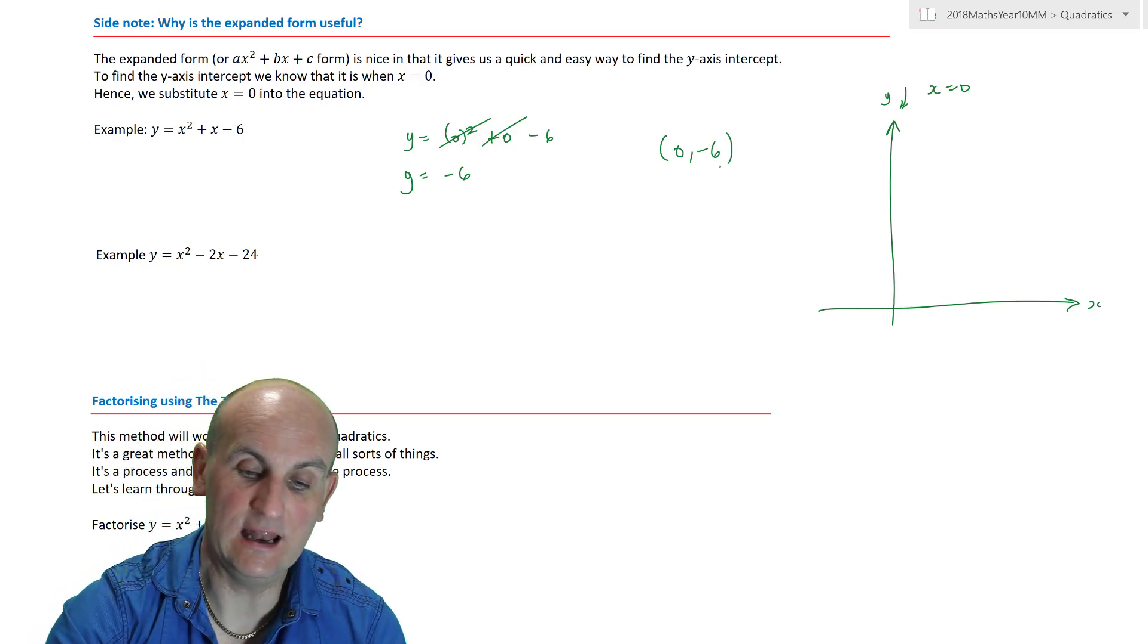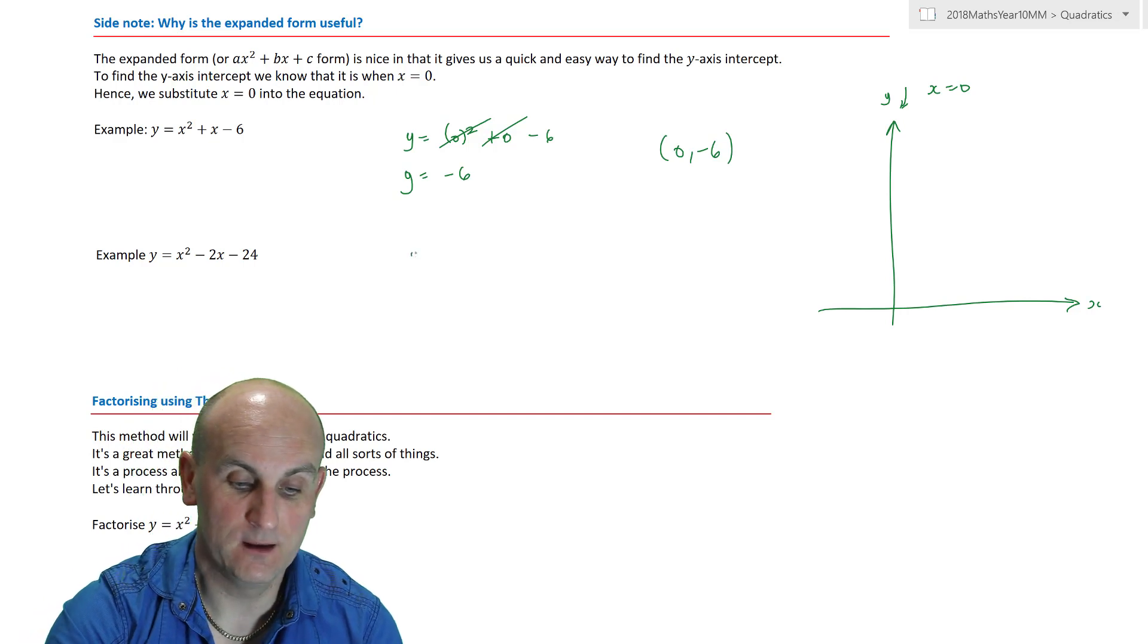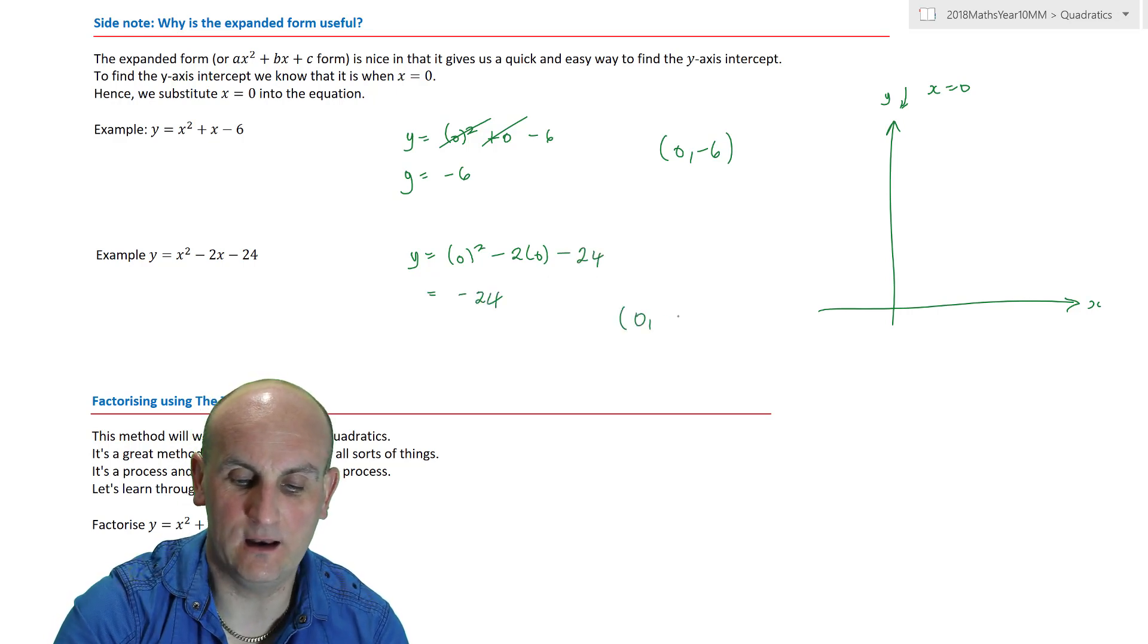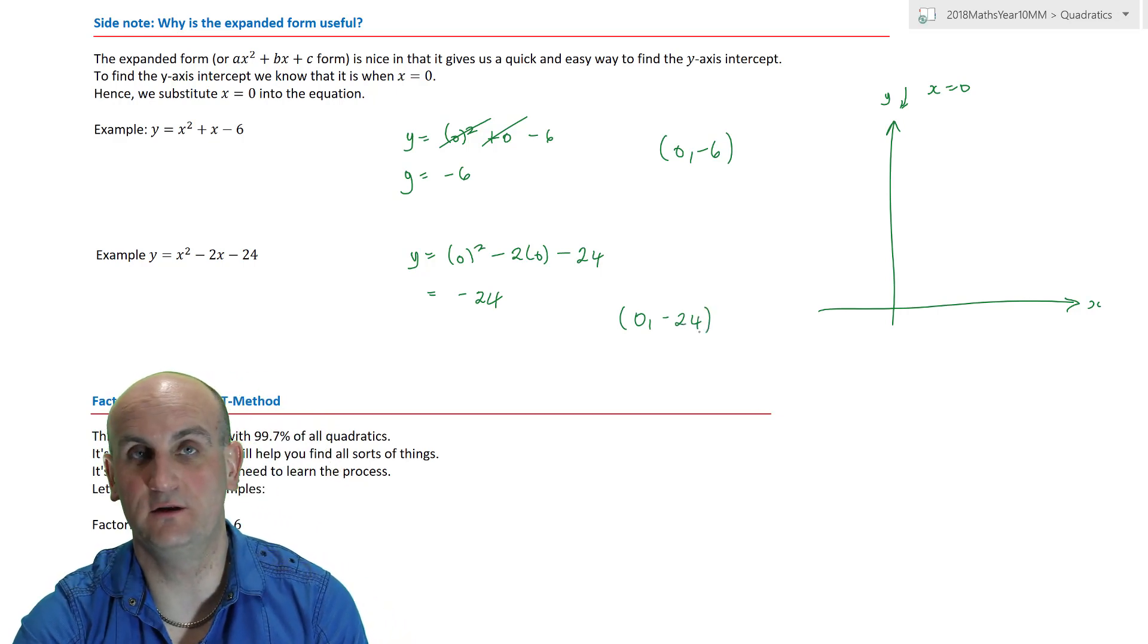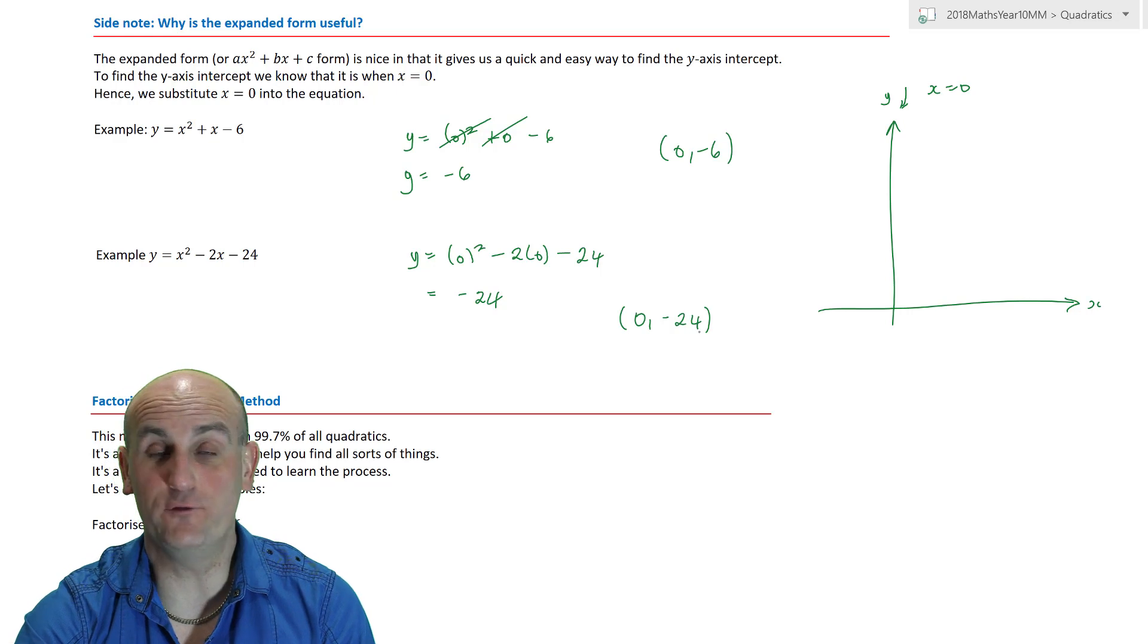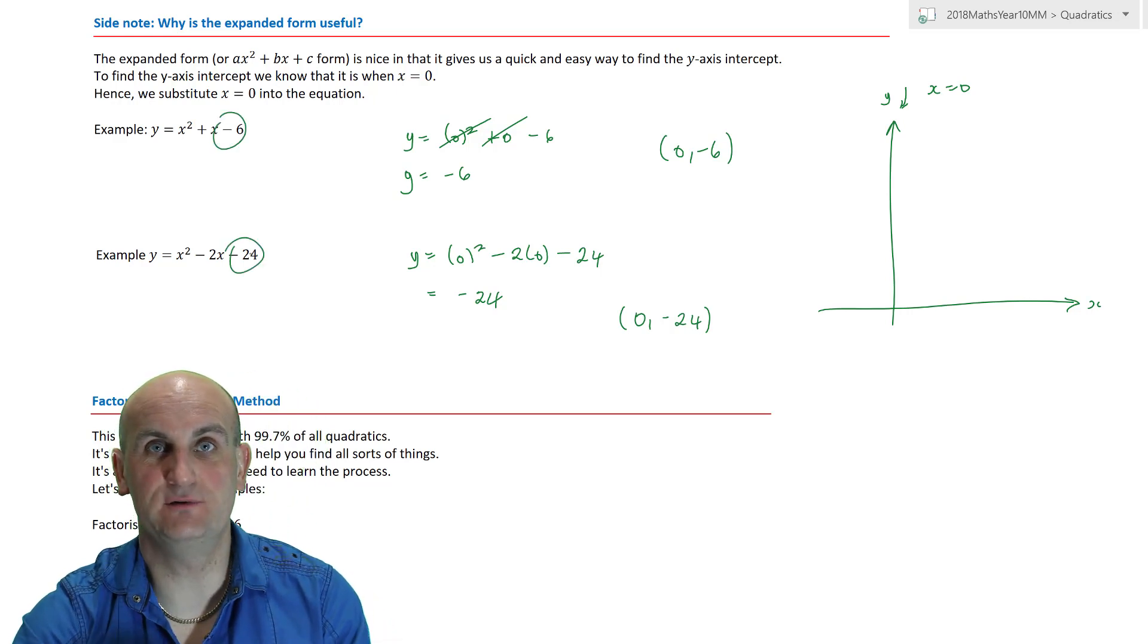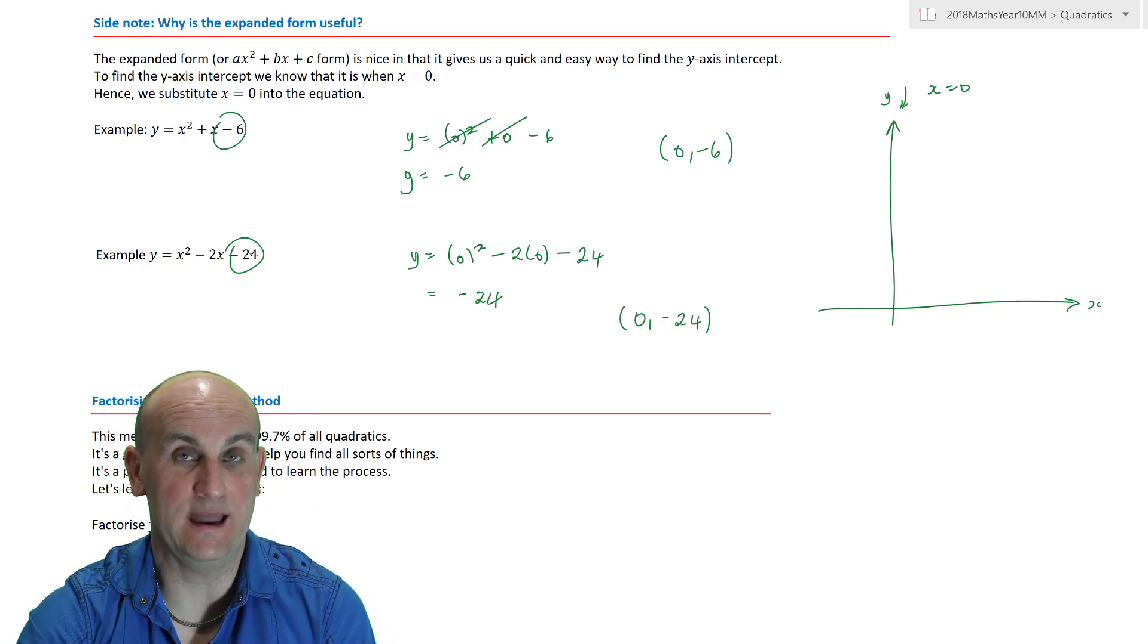One more example. Again, anywhere on that y-axis, the x-value is 0. So, y is equal to 0 squared minus 2 lots of 0 minus 24 gives me minus 24. And, again, I'd express my y-axis intercepts as 0, minus 24. Now, again, expanded form is awesome. Basically, look at this last number here. If it's written in ax squared plus bx plus c format, there is my y-axis intercept. But, it doesn't really help me find my x-axis intercepts.